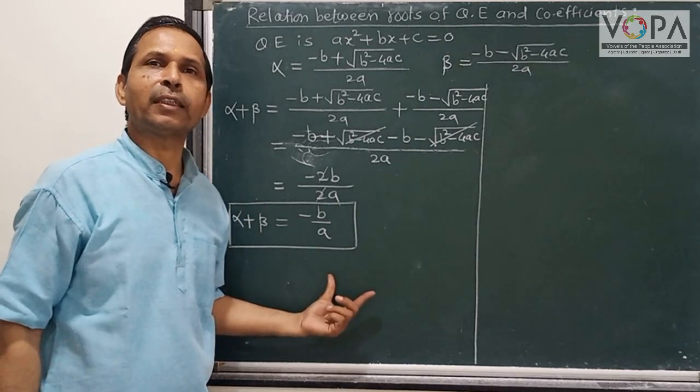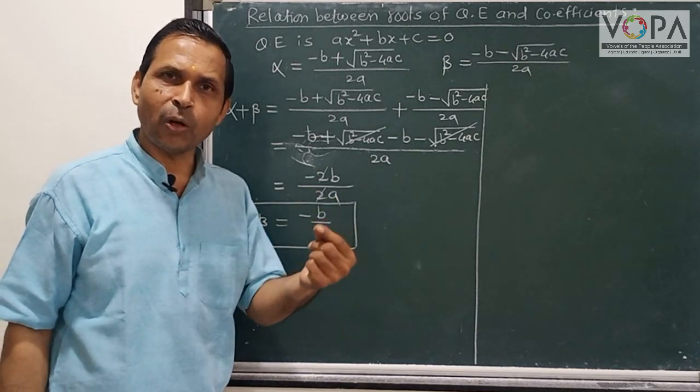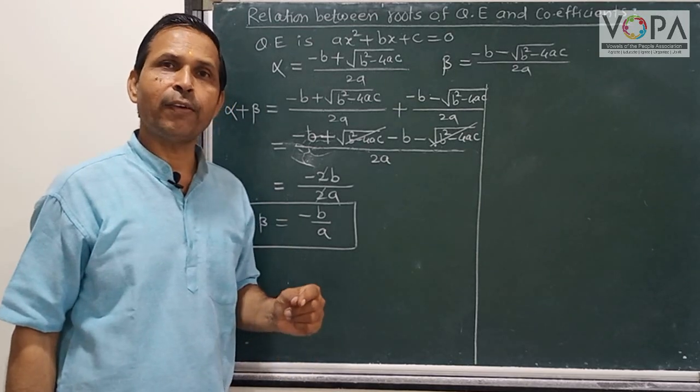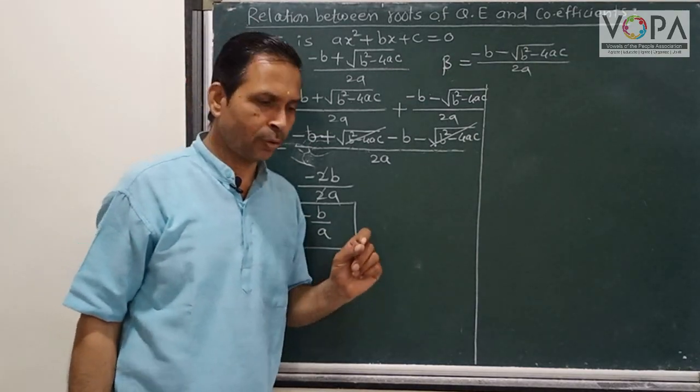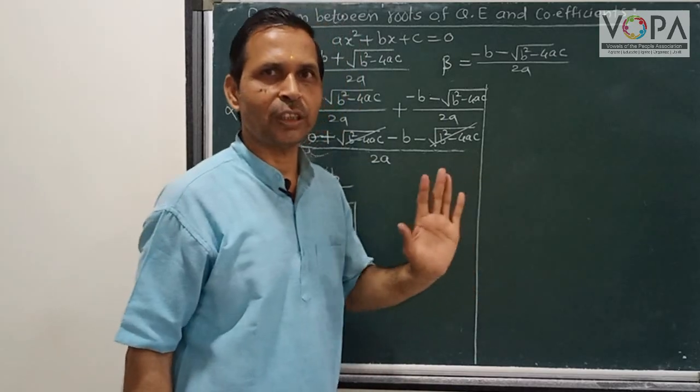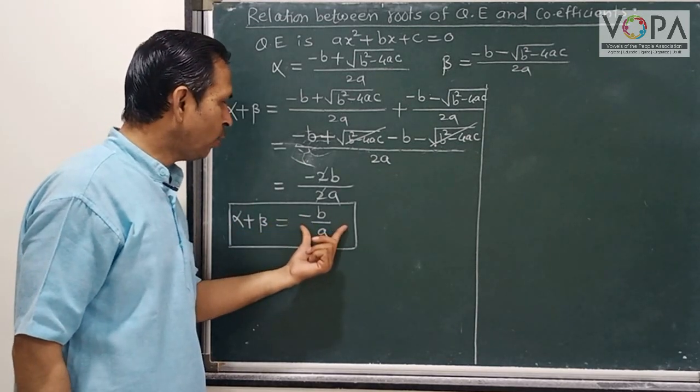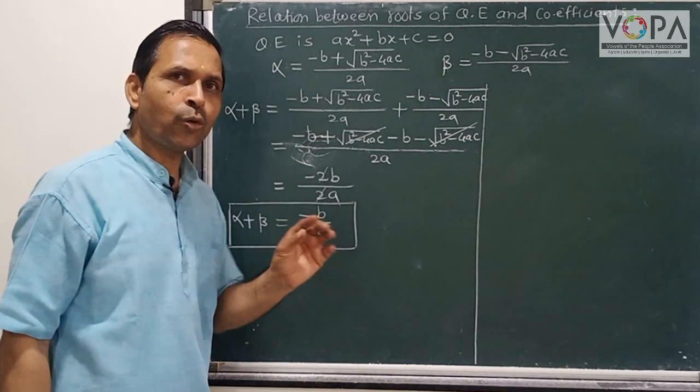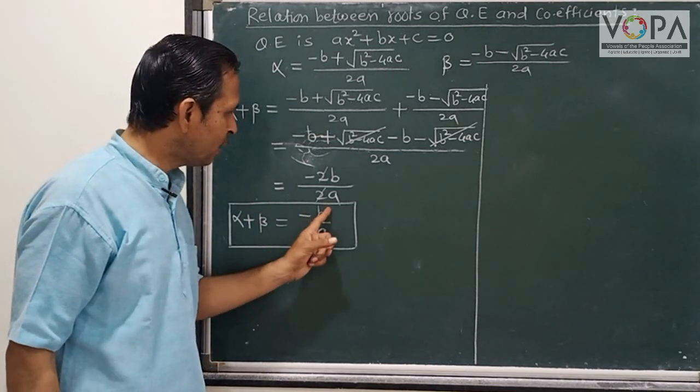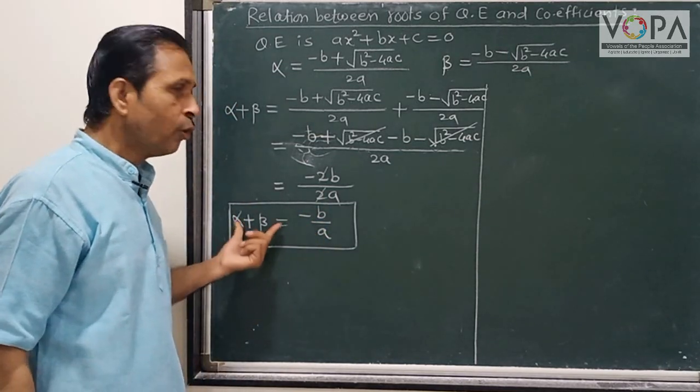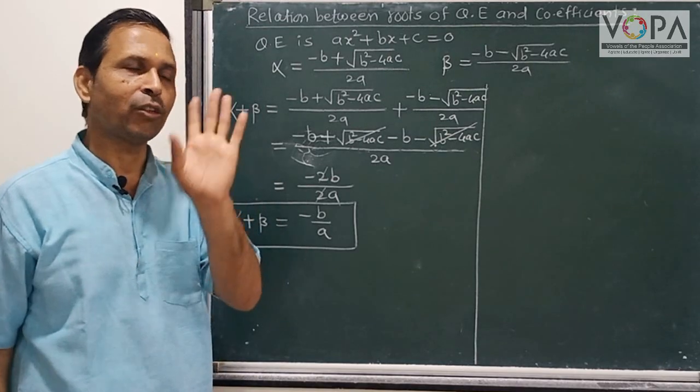This topic is very important. When you go to competitive exams, questions are asked about quadratic equations like: if the sum of roots is this and product is this, find the quadratic equation. It's very simple. This topic is extremely important. If we get the value of α + β, then using the equation's coefficients, where b is the coefficient of the middle term and a is the coefficient of the square term, we get -b/a.